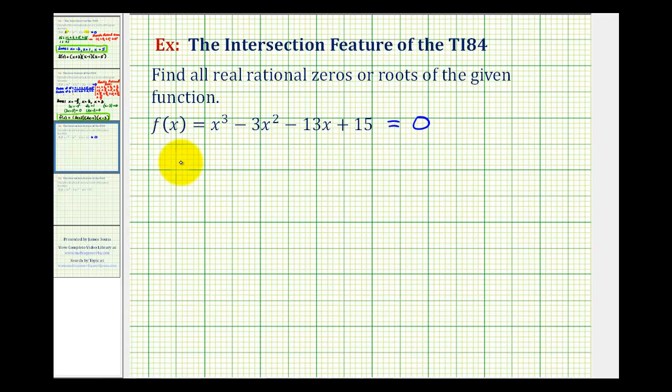To do this, we can graph y equals our polynomial function, and then also graph y equals zero, which is the equation for the x-axis. But then we can use the intersection method to find which x values make the function equal to zero.